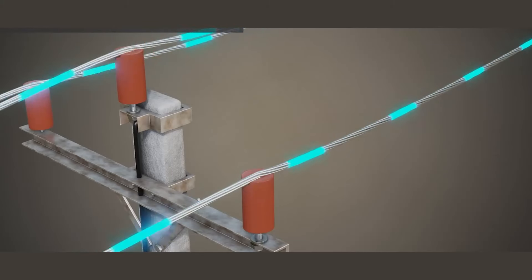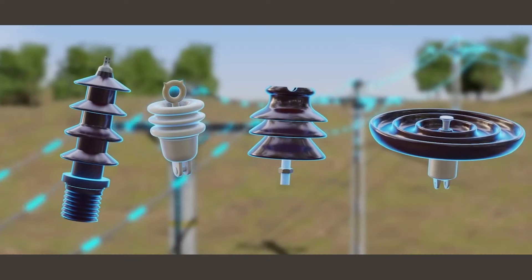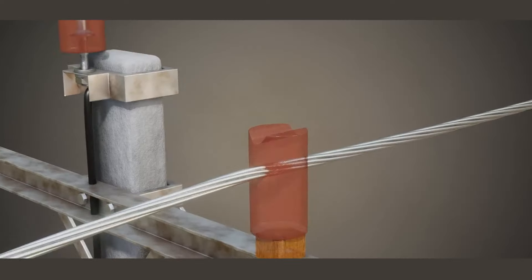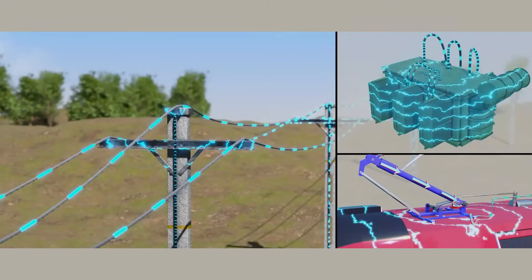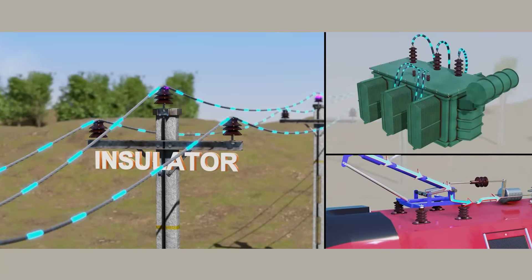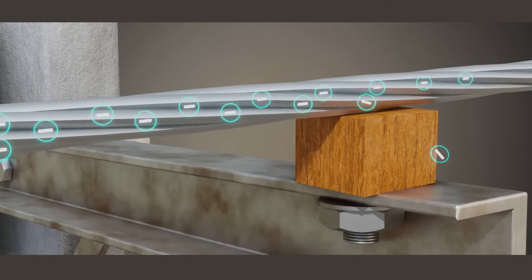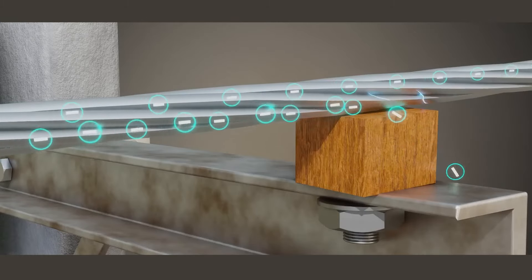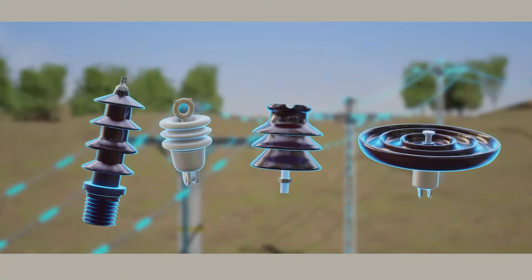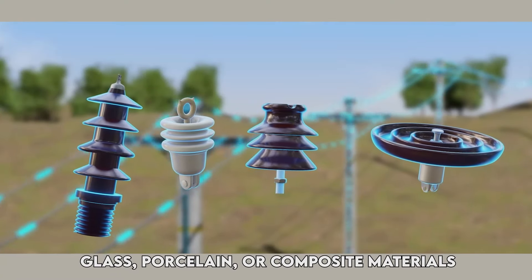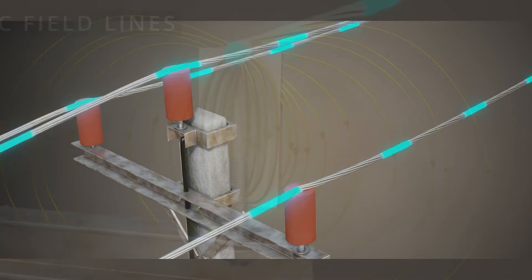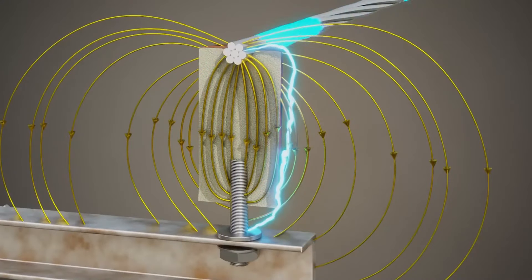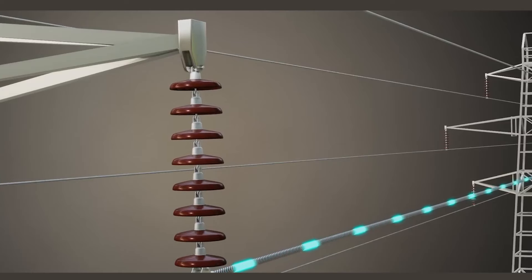As electricity flows through the high voltage transmission lines it requires insulation to keep it on the right path. This is where insulators play a pivotal role, ensuring that electricity doesn't escape where it shouldn't. Insulators serve as the guardians of our energy highways, strategically placed to prevent energy from leaking out. Insulators are typically made of materials like glass, porcelain or composite materials. These materials have the unique property of being non-conductive, which means they do not allow electricity to pass through them.